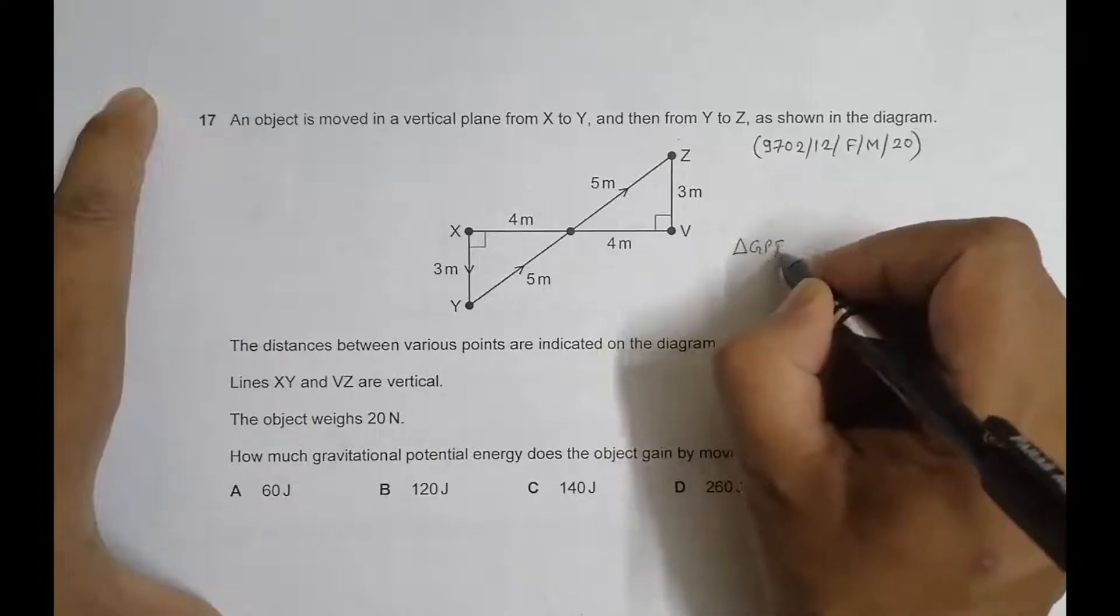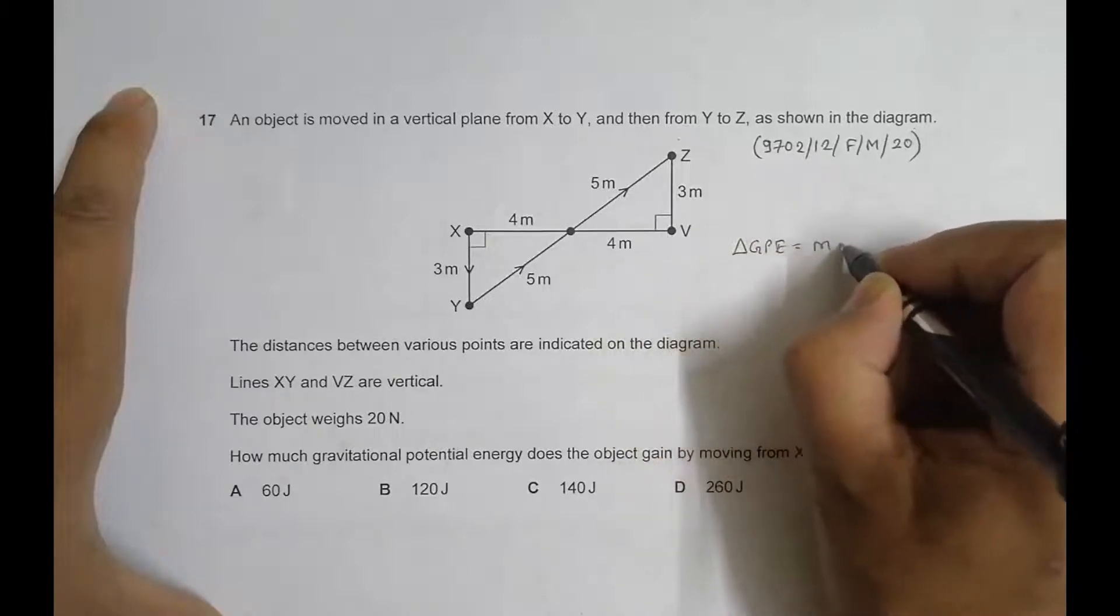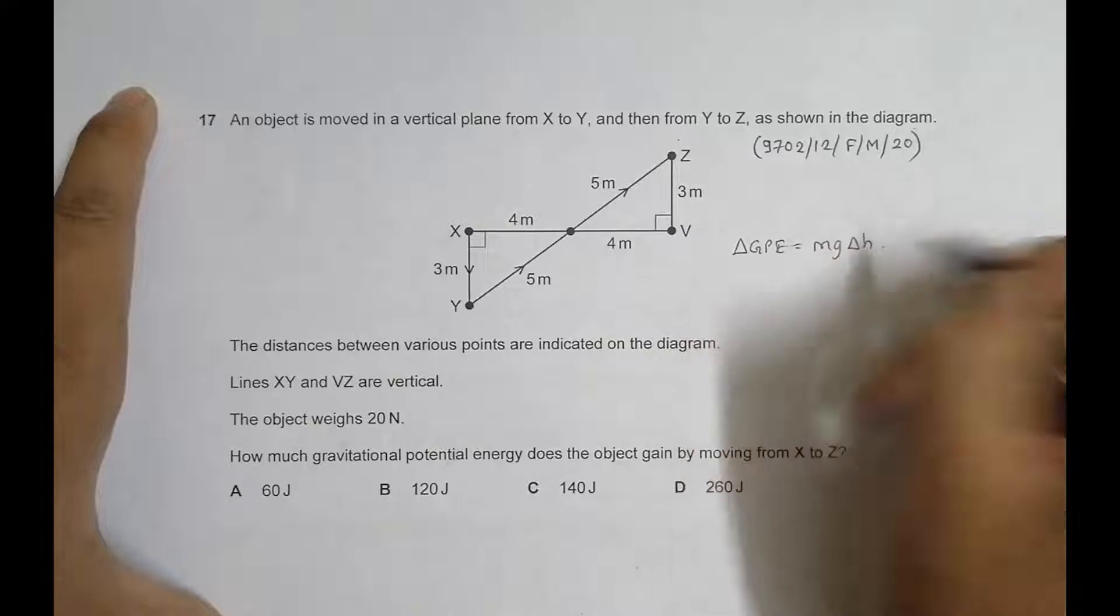The simple formula is the change in gravitational potential energy is equal to mg into delta h.